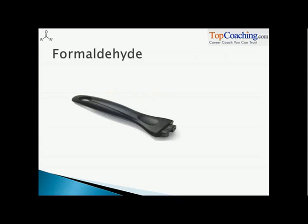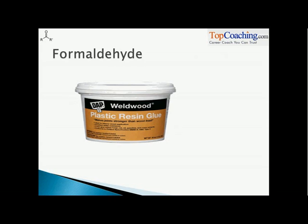The next example is formaldehyde. Your mom must be aware of this picture — the handles of pans have formaldehyde as a starting material. Then there is resin glue — to join wood, formaldehyde is used in preparing these glues.